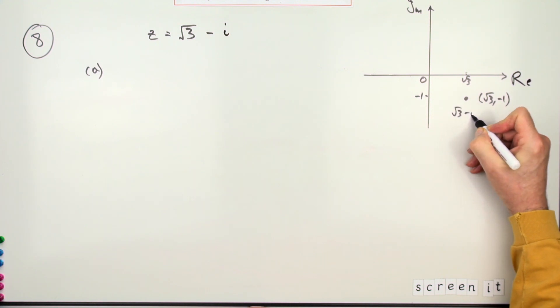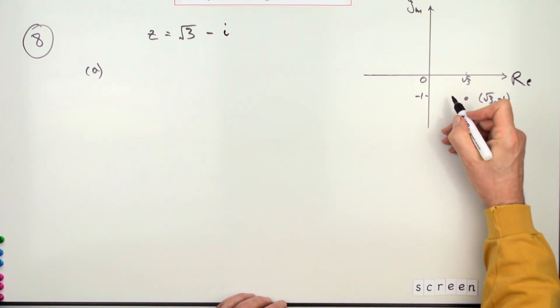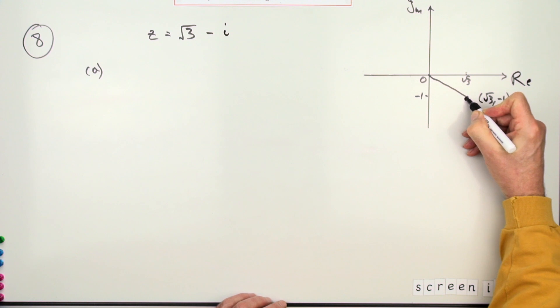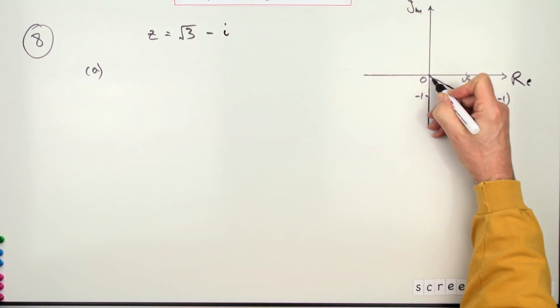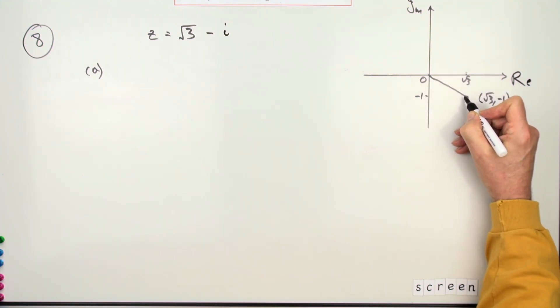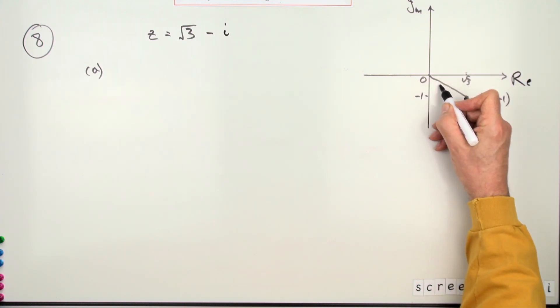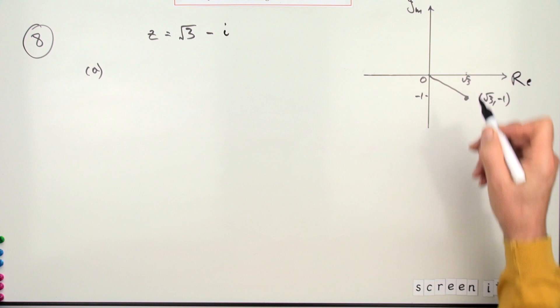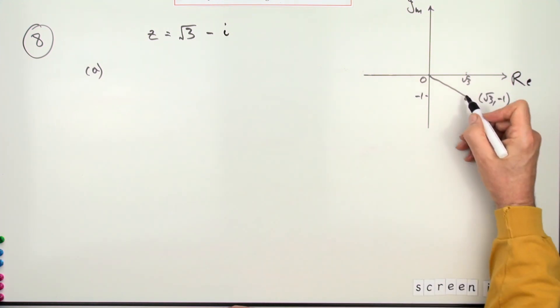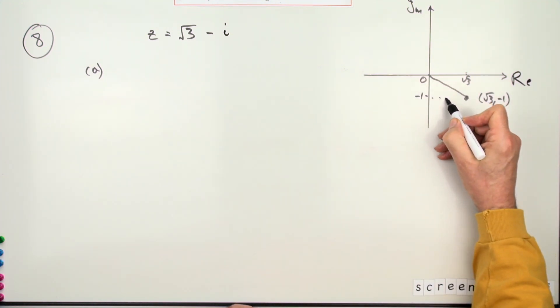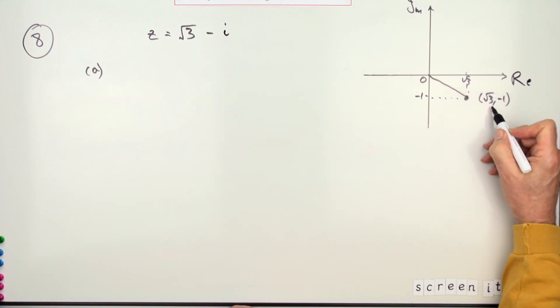However, that is the point root three minus i. It's usual to put the position vector of the point in, especially if you're going to change into polar form, which is the distance from the origin and the angle from the real axis. Anyway, having this point here—whether you mark these parts here in, or just say it's root three, negative one—that's worth a mark.